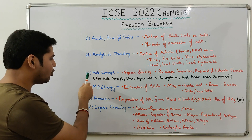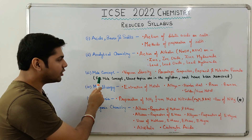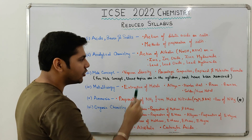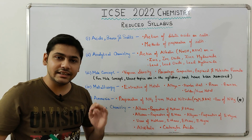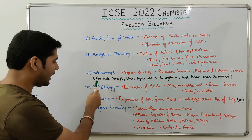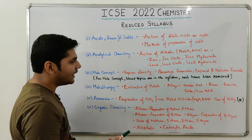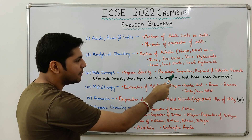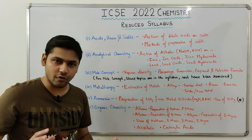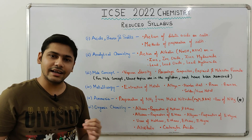Next, from Mole Concept — understand it carefully. In Mole Concept, Vapor Density and Percentage Composition, and Empirical and Molecular Formula are still in the syllabus. Rest, all the topics have been removed. So more or less, the entire chapter of Mole Concept has been removed. Only these two topics are left.